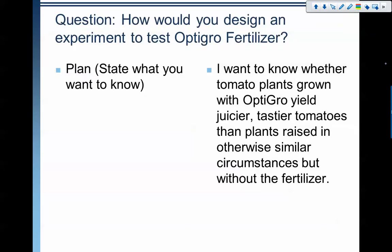So let's talk about our setup. What I'm trying to figure out — the basis of my experiment — is whether tomato plants grown with OptiGrow fertilizer yield juicier, tastier tomatoes than plants raised in otherwise similar circumstances but without the fertilizer. I want to know that if I have a bunch of plants all in the same conditions, do the ones with the fertilizer grow better tomatoes than the ones without?